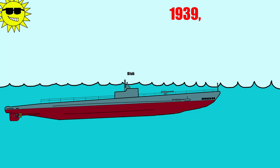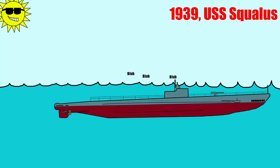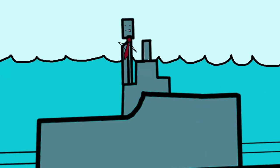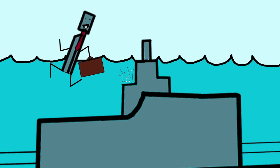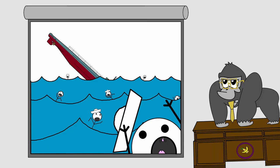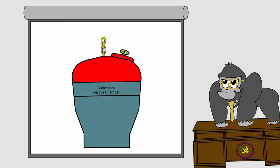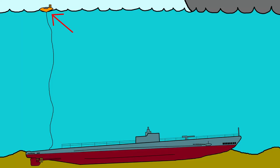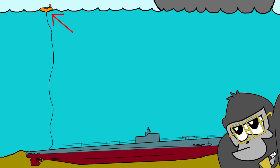USS Squalus was moseying along in 1939, when its air snorkel decided to change careers and become a water siphon, helping 26 of the crew become more intimately acquainted with the ocean. Fortunately, this sort of thing happened all the time to submariners, so the Navy had built a handy dandy rescue chamber. They found the Squalus' sinking marker buoy, once again happened all the time.